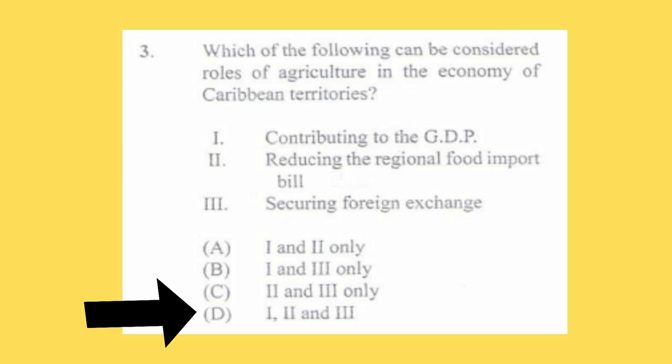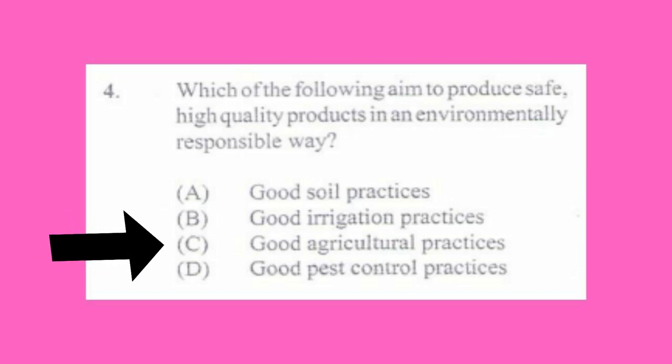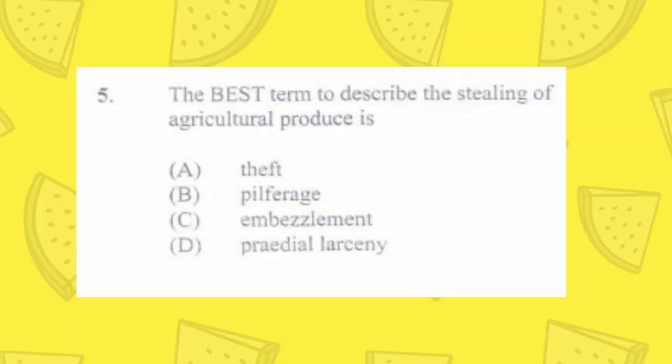Economic activities involve production, buying, and selling activities. Question number four: which of the following aims to produce safe, high quality products in an environmentally responsible way? The answer is c) good agricultural practices.